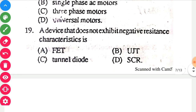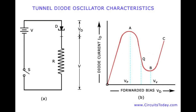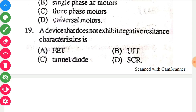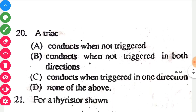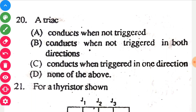In the 1900s the Ward Leonard control system was adopted by the US Navy and also used in passenger lifts of large mines. A device that does not exhibit negative resistance characteristic — in electronics, negative resistance is a property where an increase in voltage results in a decrease in current. Field effect transistors lack this property, so option A is correct.